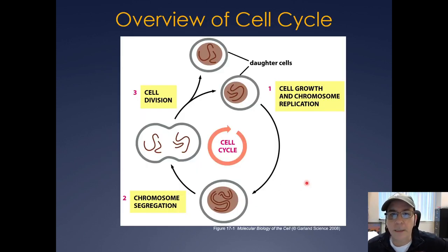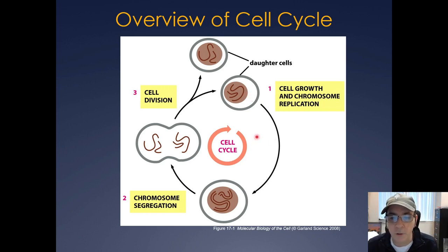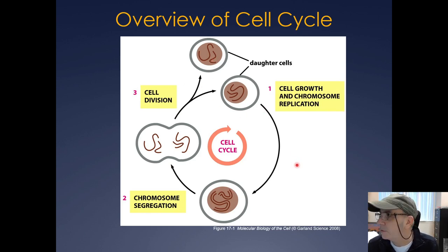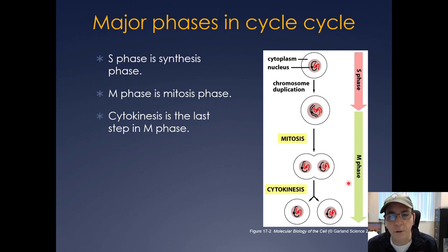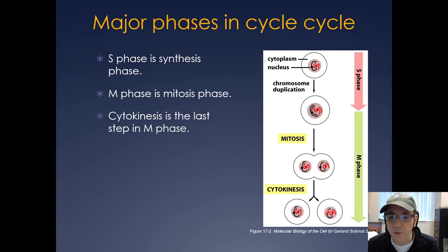If we look at the cell cycle in its most basic form, you have a cell that undergoes growth and chromosome replication — it has to replicate its genome. Once it's replicated its genome, it can segregate all of the chromosomes, and then divide into two daughter cells. It's broken down into two phases: S phase, when synthesis is happening and all the DNA is being replicated, and M phase, when the cell undergoes mitosis and actually divides. The last step in M phase is cytokinesis, where the cells actually divide, pinch off from one another, and become two separate cells.